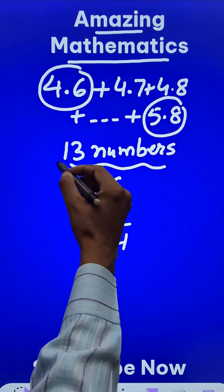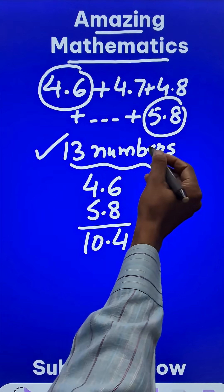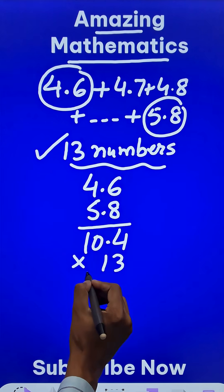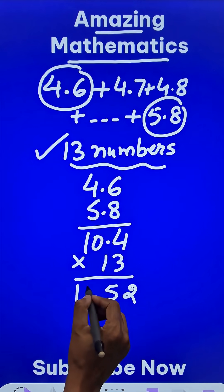Multiply this number by the total numbers that is 13. There are 13 numbers, right? So multiply it by 13. So you get 52 and 13 ones are 13.